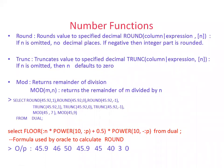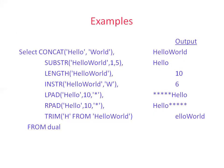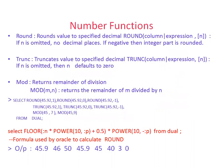Moving on to number functions — this is a smaller set of functions. There are only three main ones: ROUND, TRUNK (TRUNCATE), and MOD, which seem similar but each behaves differently. The functions available may also vary based on the Oracle database version you're using, and there could be additional functions available in newer versions.